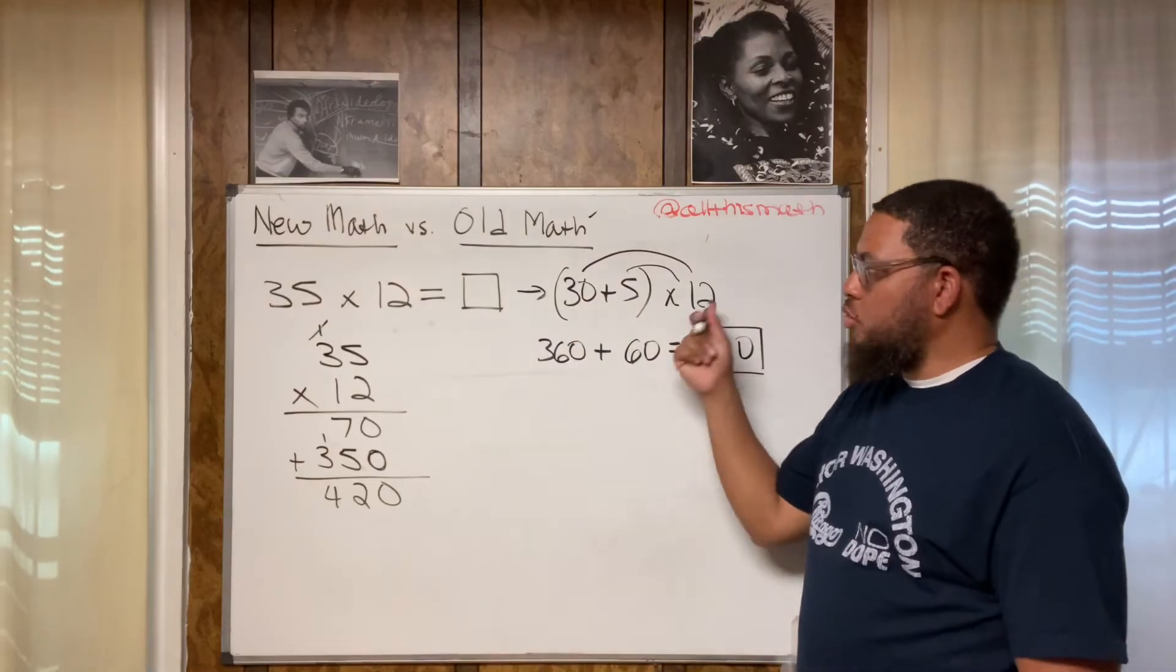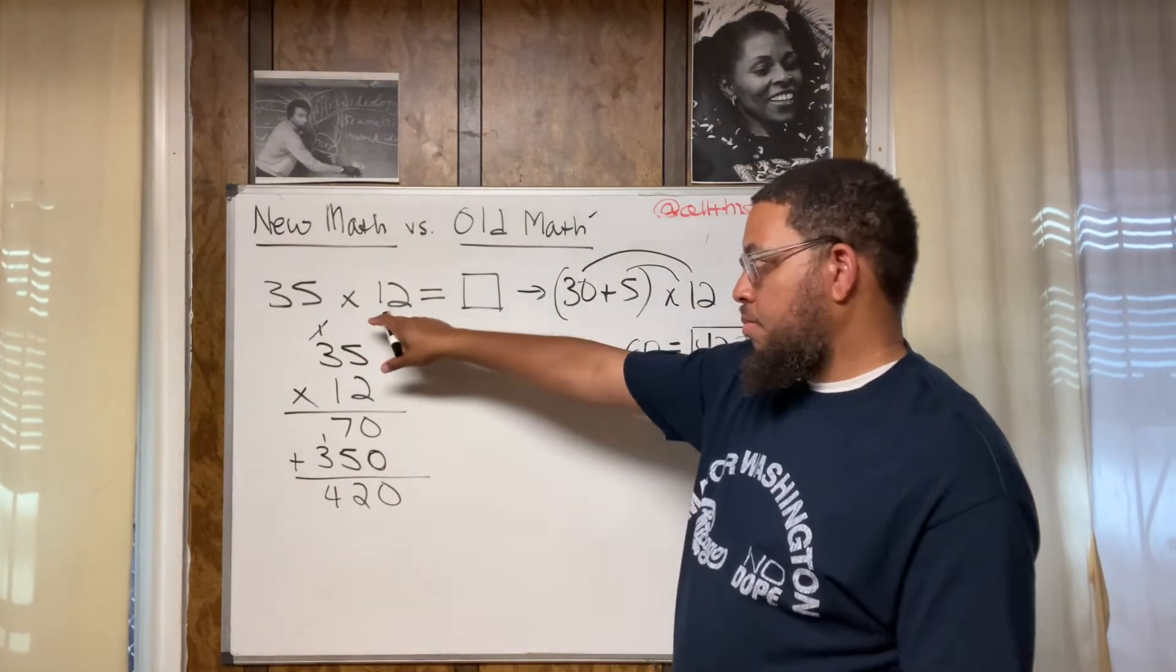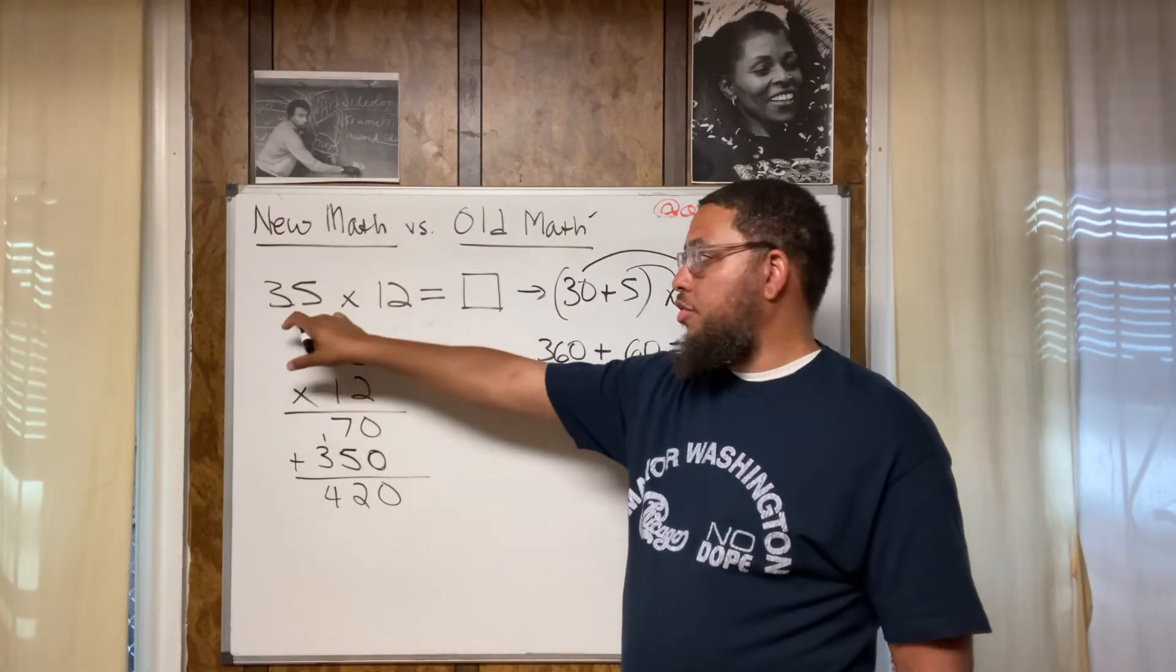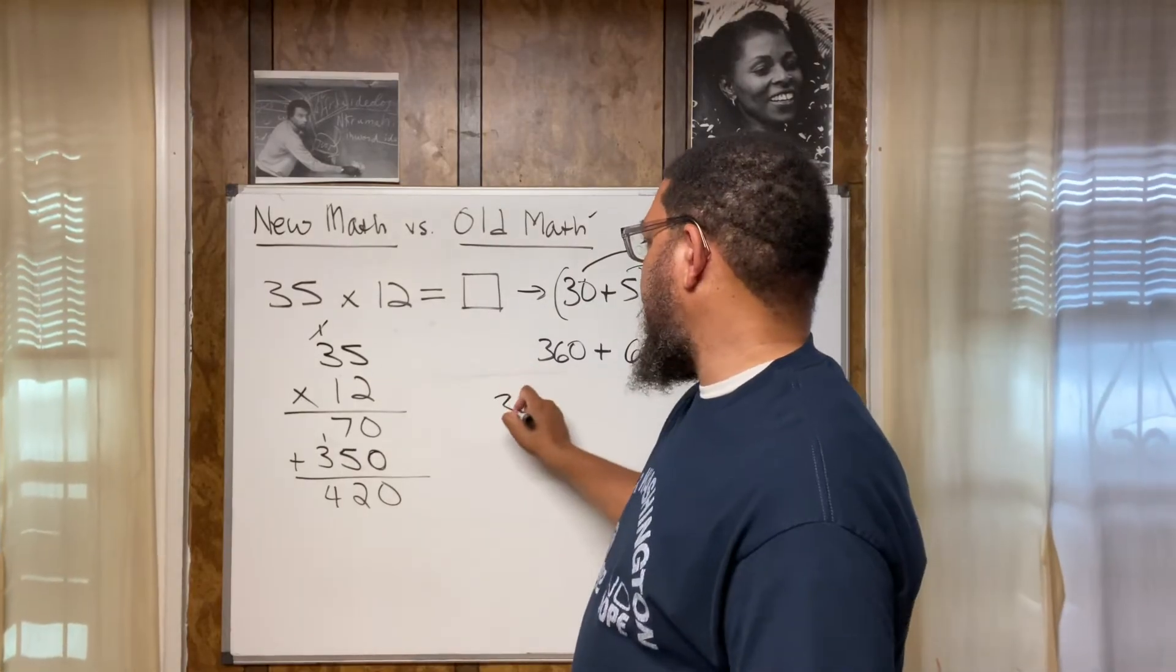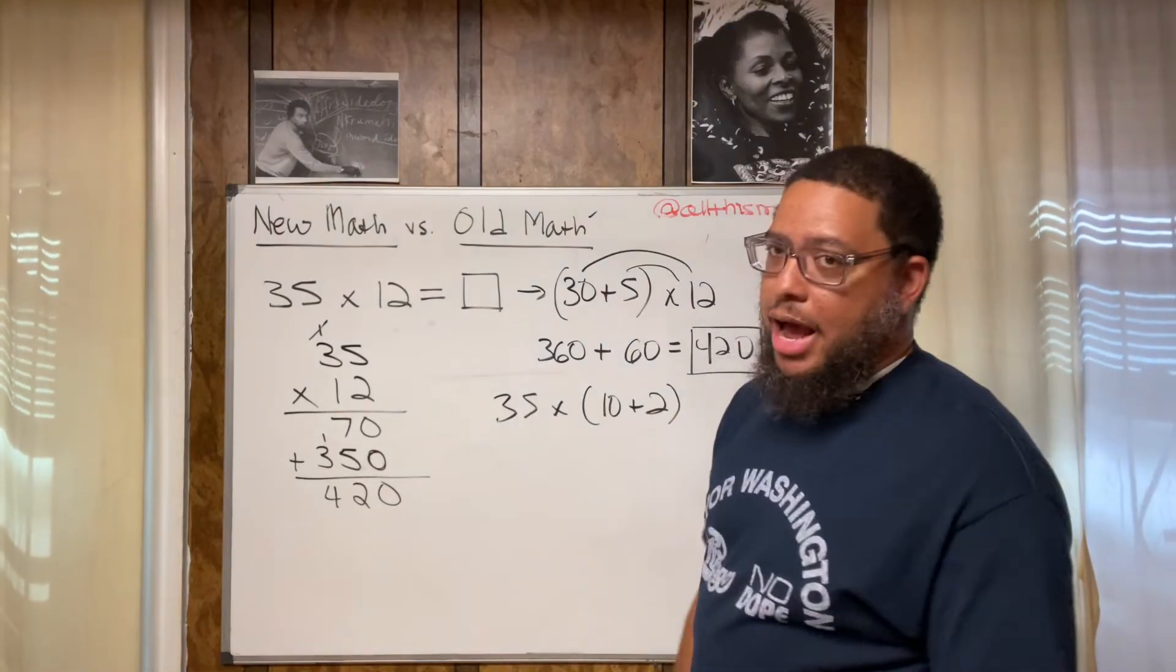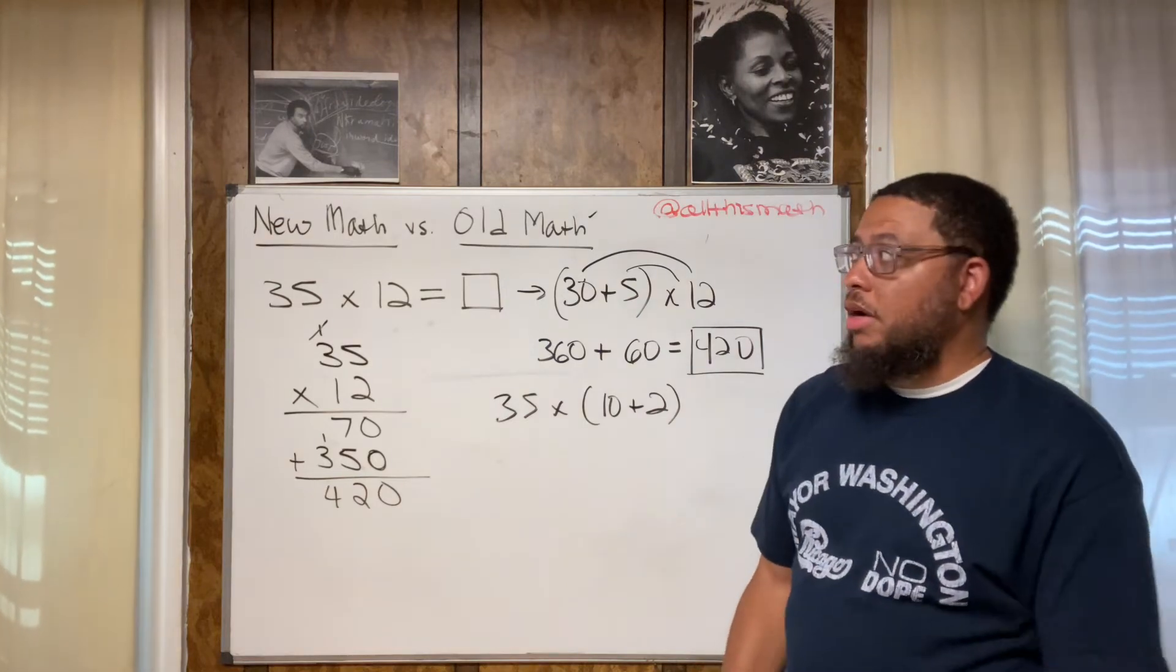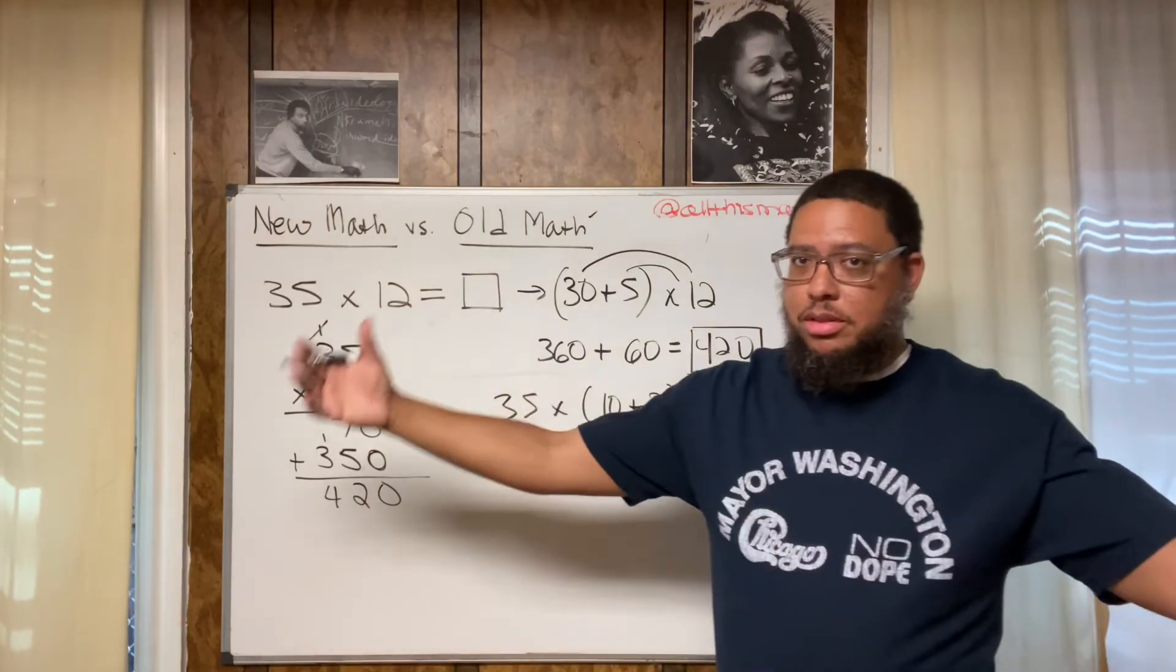Now, dig this. When we're talking about happy numbers, I made 35 into a happy number. I broke 35 and decomposed 35 into 30 plus five. I also could have decomposed 12 and get a happy number. Then I would have had 35 times 10 plus two. So I love having options. That's one of the things I like about math. I like having options. And one of the things I recognize with what we call the new math is that the new math provides options to our children.